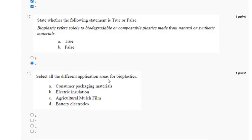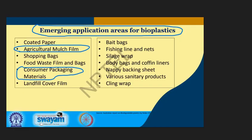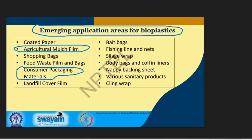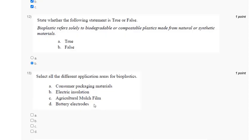Question 13: Select all the different application areas of bioplastics — consumer packaging material; electric insulation; agriculture mulch film; battery electrode. Emerging application areas of bioplastics include: coated paper, agriculture mulch film, shopping bags, food waste film and bags, consumer packaging material, landfill cover film, bat bags, fishing line and nets, sledge wrap, body bags and coffin liners, nappy packing, sanitary products, and cling wrap. The correct answer to question 13 is options A and C.